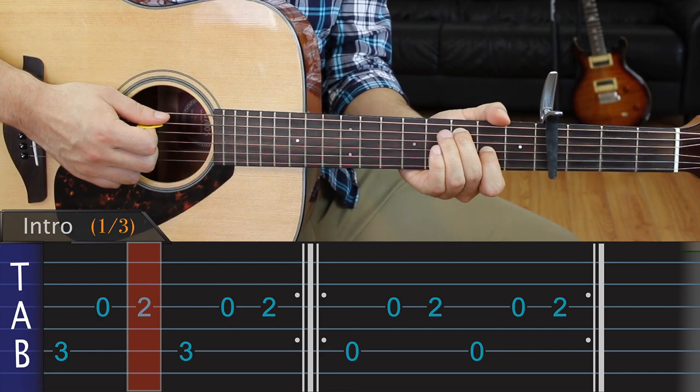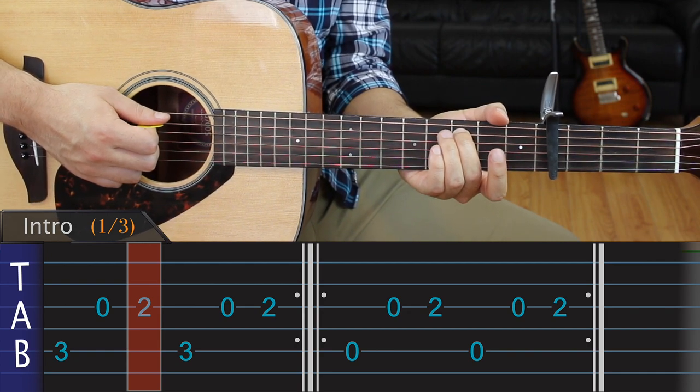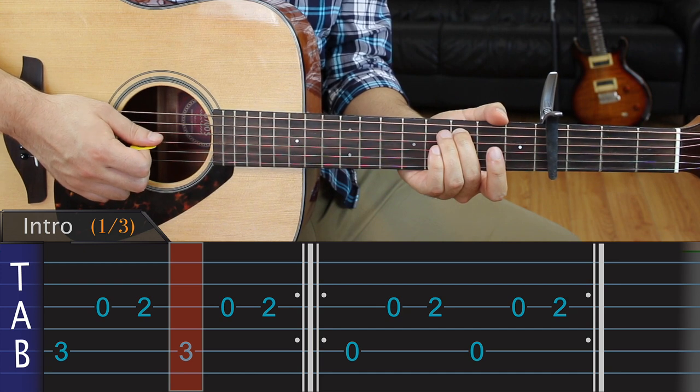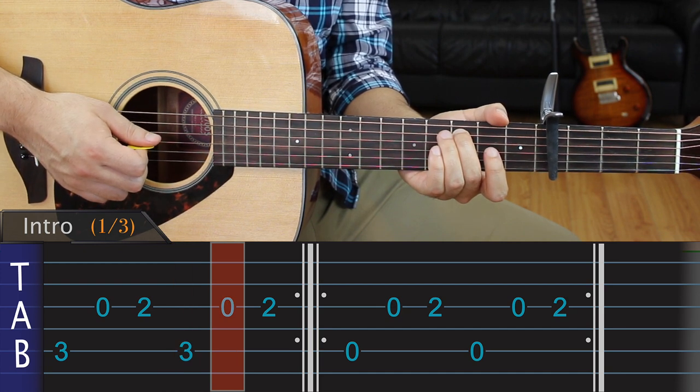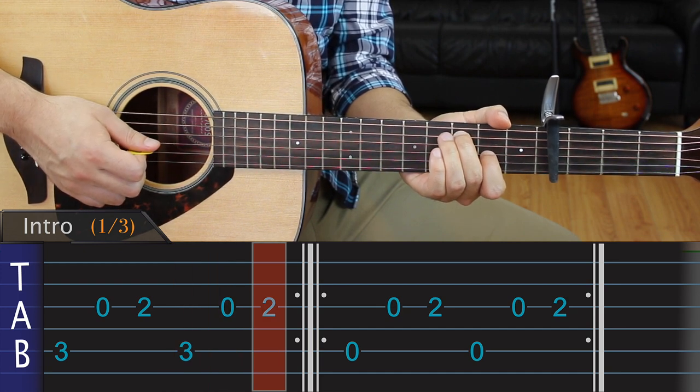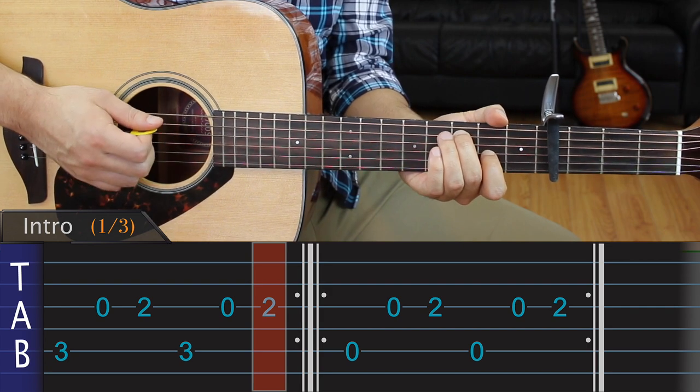We then play the same three notes again, starting with the third fret of the A, open G, then second fret, same string. Next, we repeat those six notes one more time.